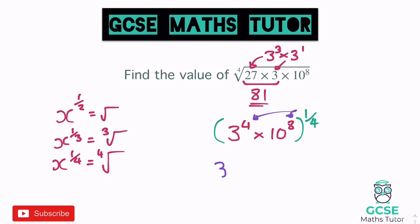Multiplying out: 3 to the power of 4 times a quarter — that's 4 quarters, which equals 1 — so we get 3 to the power of 1. For the other term, a quarter of 8 is 2, so we get 10 to the power of 2. We now have 3 to the power of 1 times 10 squared.